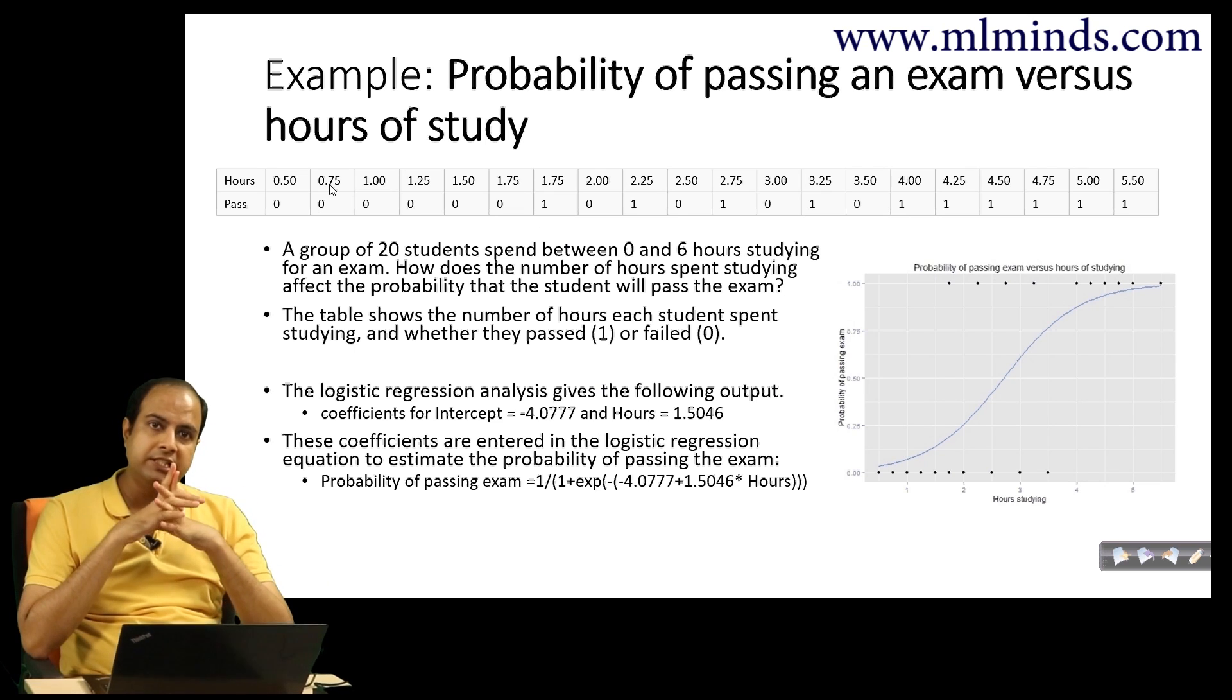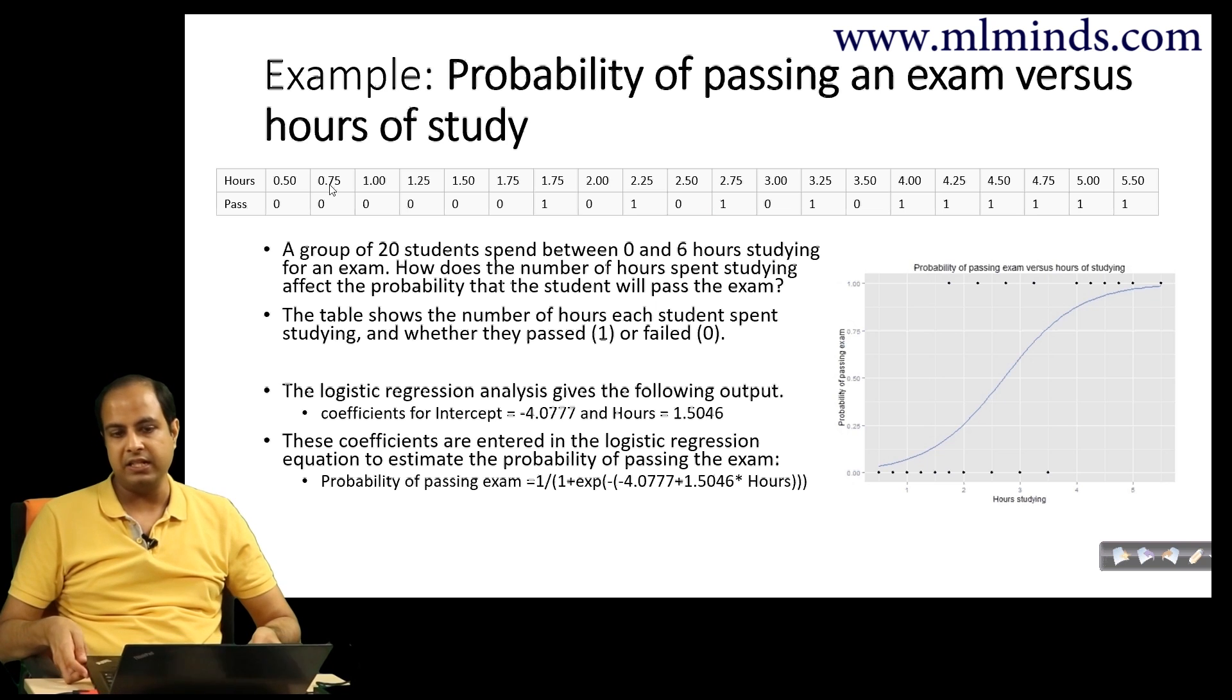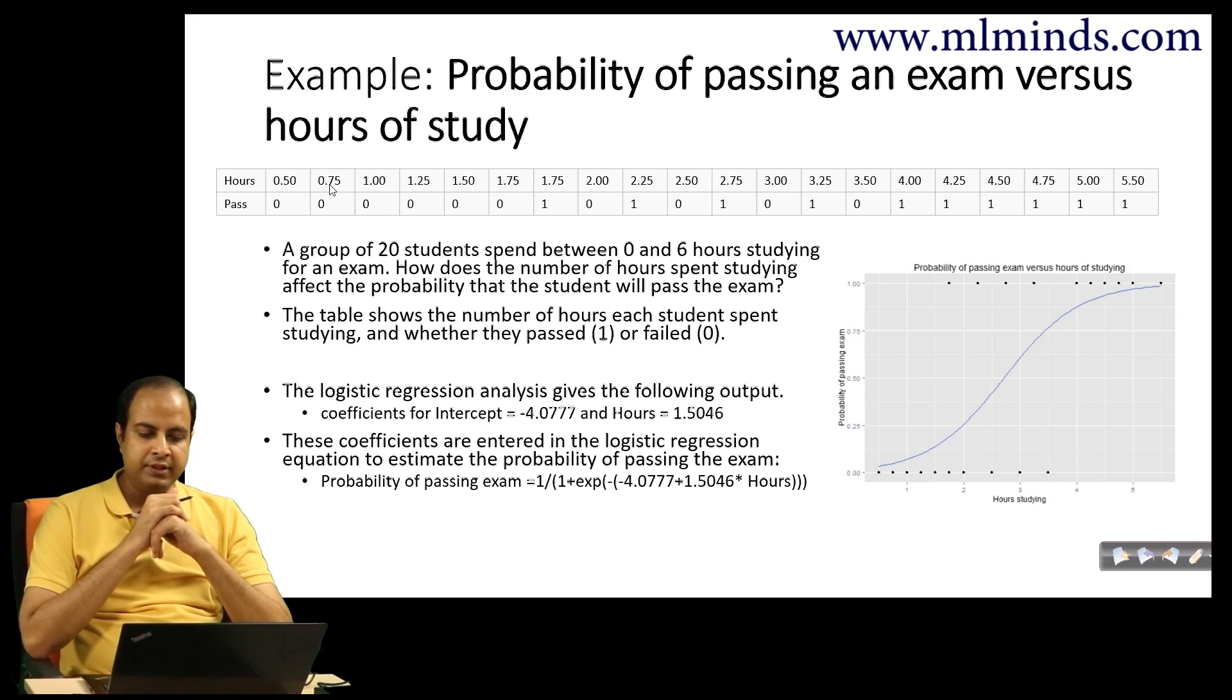Here is an example of logistic regression: probability of passing an exam versus hours of study. This is a data set where 20 students were recorded. You see some students studying just for half an hour, quarter hour, three quarters, one hour, 1.5 hours, and so on.